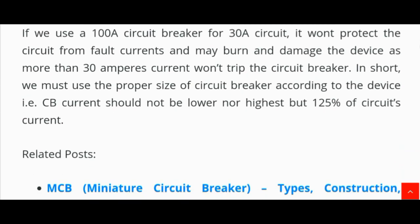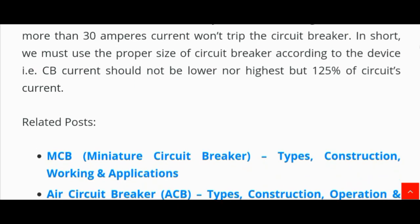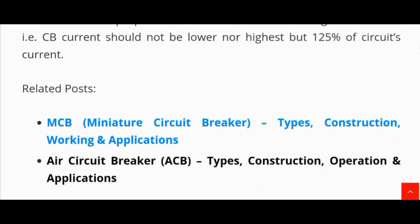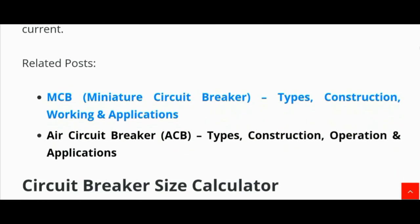For example, if we use a 100 ampere circuit breaker for a 30 ampere circuit, it won't protect the circuit from fault currents and may burn and damage the device, as more than 30 ampere current won't trip the circuit breaker. In short, we must use the proper size of circuit breaker according to the device — the circuit breaker should not be lower nor higher, but 125 percent of the circuit current.